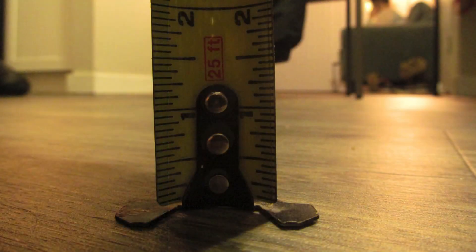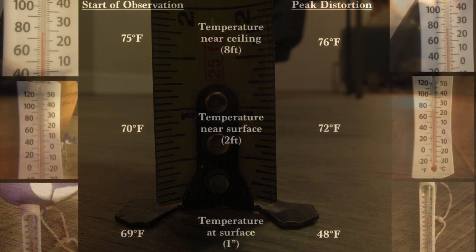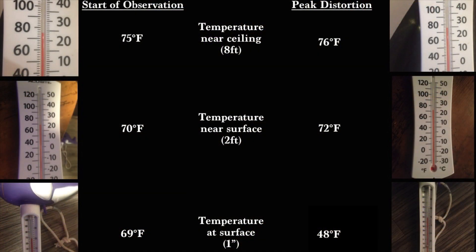This experiment was conducted between 10 and 10:30 p.m. Here's an infographic of the temperature composition at the start of the observation and during peak distortion. The temperature outside was 27 degrees Fahrenheit.